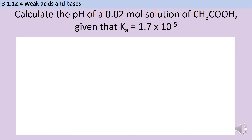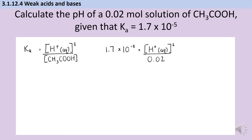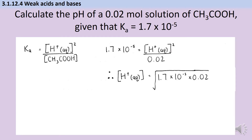We have two worked examples to do together, then five for you to practice on your own. In the first question, we calculate the pH of a 0.02 mol dm⁻³ solution of ethanoic acid, given that Ka is 1.7 × 10⁻⁵. First, write an expression for Ka. Since this is a pure weak acid, we can use hydrogen ions squared. Substituting in the values, hydrogen ions = √(Ka × [acid]) = √(1.7 × 10⁻⁵ × 0.02) = 5.831 × 10⁻⁴ mol dm⁻³.